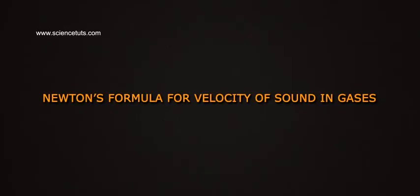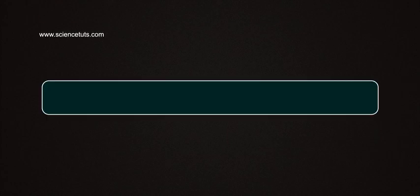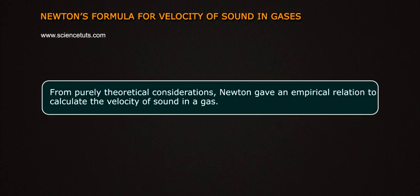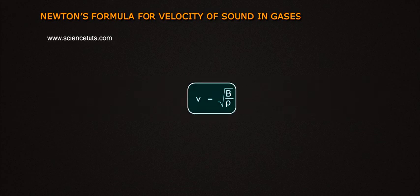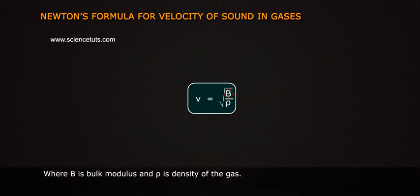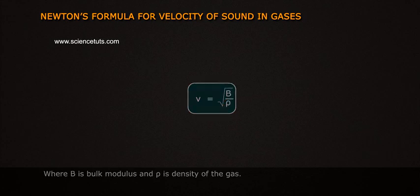Newton's Formula for Velocity of Sound in Gases. From purely theoretical considerations, Newton gave an empirical relation to calculate the velocity of sound in a gas: nu equals square root of b by rho, where b is bulk modulus and rho is the density of the gas.